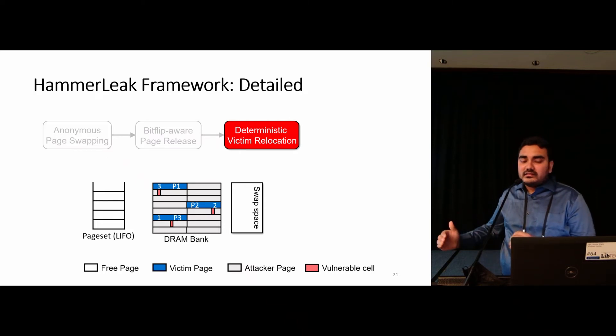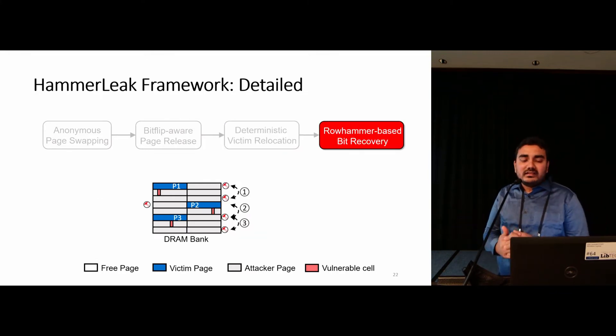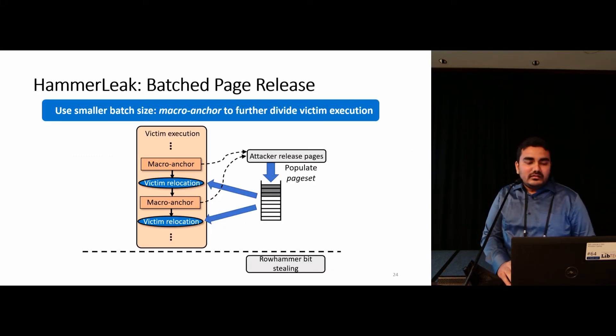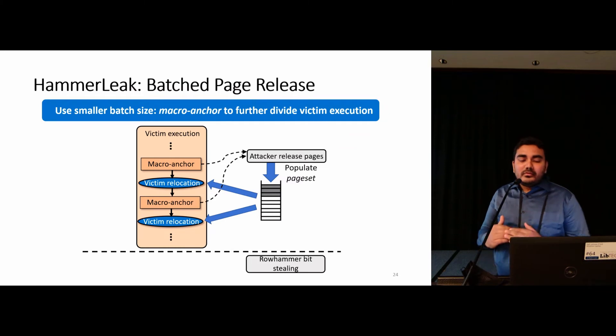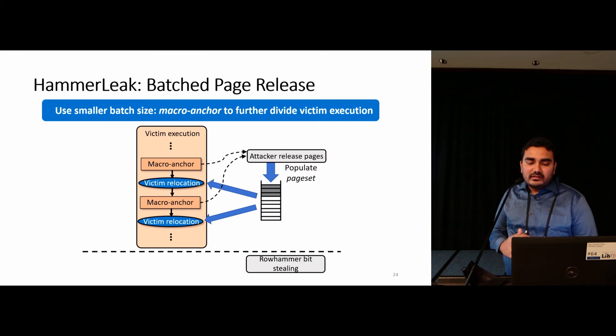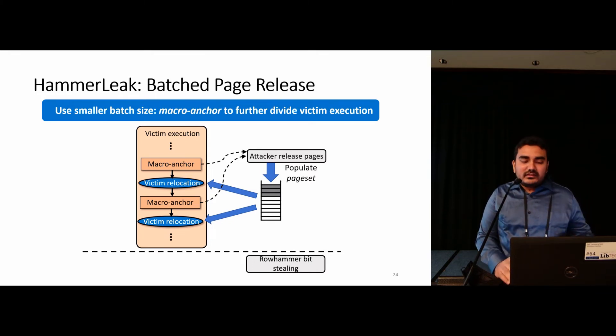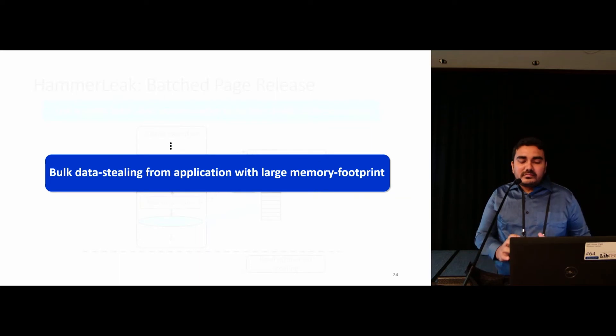In the third step, the attacker's goal is to precisely allocate the victim pages to the recently freed desired locations. When the victim accesses the pages from the swap region, the operating system places them into free locations from the page set in the last in first out manner. Based on the order of the victim page access, the attacker can precisely locate them later on because he has populated the page set earlier. Finally, the attacker performs generic rowhammer-based bit stealing to recover victim secrets page by page. We propose best page release to break down the victim application access to smaller pieces. We use cache-based anchor points to monitor small parts of victim execution and when the victim execution reaches to a specific region of interest, the attacker releases pages accordingly in a predetermined manner. Using this method, we can effectively relocate large victim applications and perform bulk data stealing using the generic rowhammer technique.